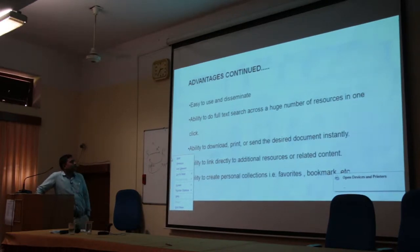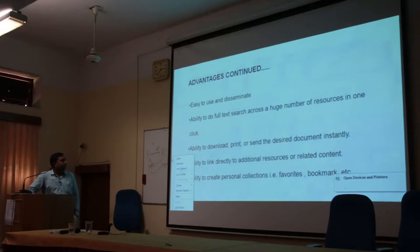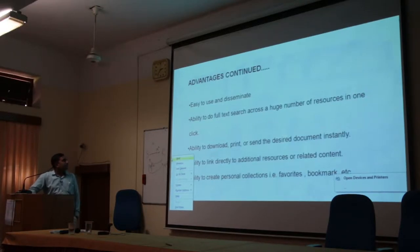The ability to full-text search across a huge number of resources in one click. For example, if you have access to Springer or any online journal, you can search very simply. With printed journals, it is time-consuming because you have to go through page by page or the index. If you have a whole database, you can easily access, download, print, and send the content to anyone.